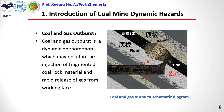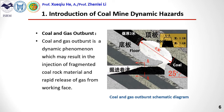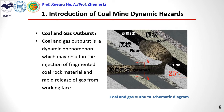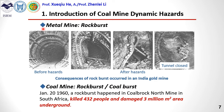As the diagram demonstrates, coal and gas outburst is a dynamic phenomenon which materializes in the injection of fragmented coal and rock material and rapid release of gas from the working face. This phenomenon normally occurs in the process of roadway excavation. Rock bursts have occurred in two cases. The first is in metal mines or tunneling projects, where rock bursts mostly cause damage to tunnels, and severe rock bursts can even make the tunnels be closed. The second case is in coal mines.